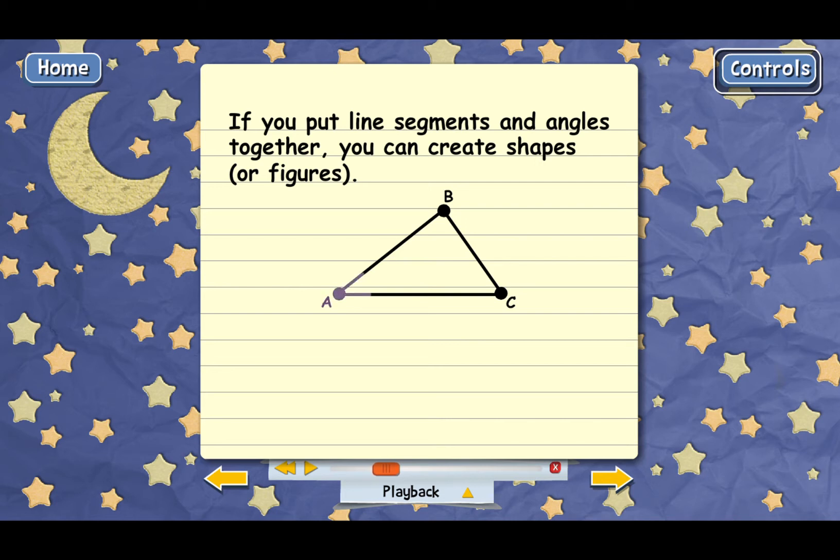There's angle A, angle B, and angle C. Every triangle has three sides and three angles. Tri actually means three. And we can call this triangle ABC. That's the way triangles are named.